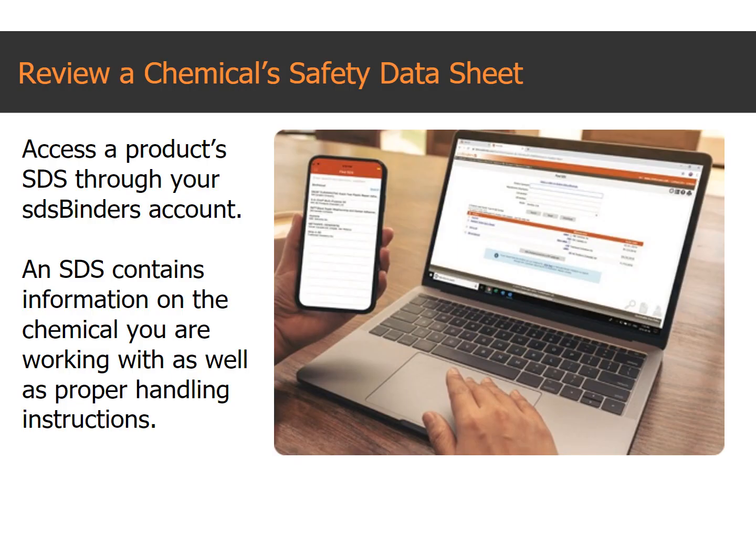Understand the chemicals you are working with. This can be done by reviewing the chemical safety data sheet and label. You can access the safety data sheet in SDS binders for information on the chemical. It will contain information on proper handling instructions. Ask your supervisor for clarification if necessary.